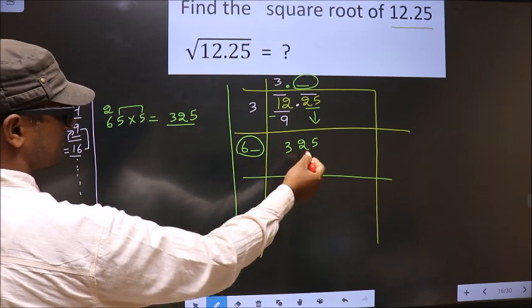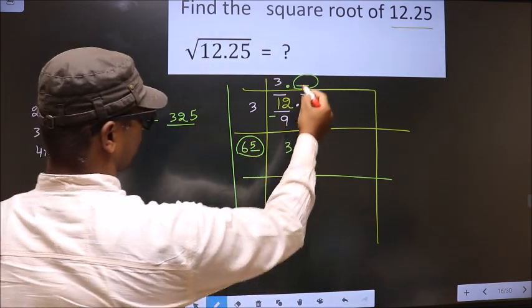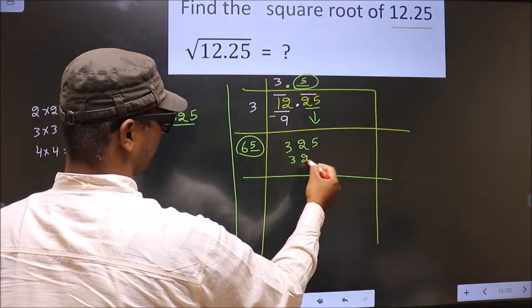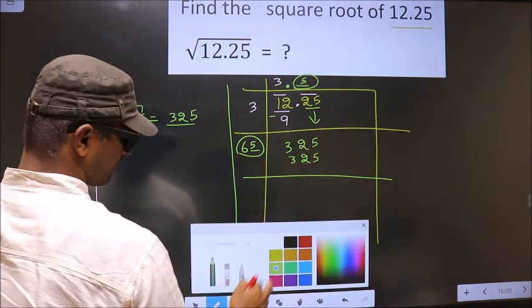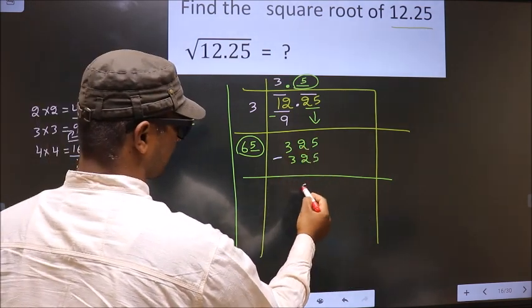We got exact 325. So you take 5 here, 5 here, 325. So now you subtract. 325 minus 325 is 0.